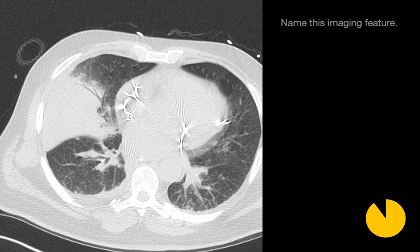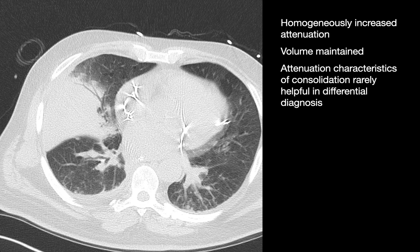Name this imaging feature — and the answer is not air bronchogram. We're referring to this large region of opacified, white-appearing lung. The volume of this area looks maintained; it does not look contracted like you might see in atelectasis or fibrosis. The answer we're looking for is just consolidation — a region of increased attenuation lung with volume maintained.